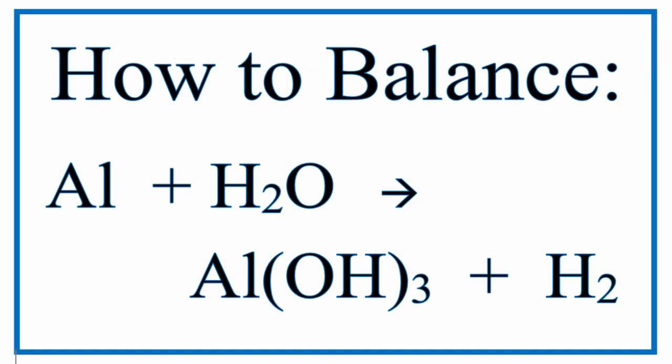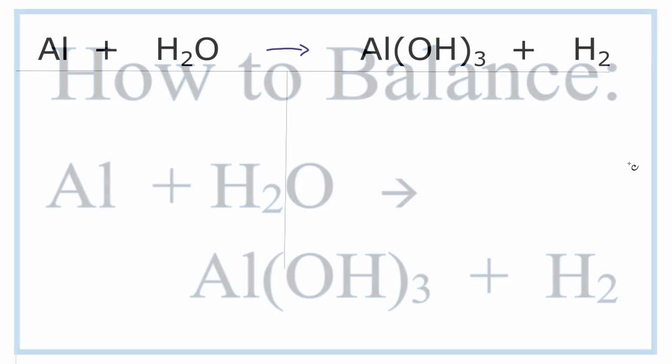If you're having problems balancing this particular equation, aluminum plus water gives you aluminum hydroxide and hydrogen, that's probably because it's a pretty tough equation. So let's work through it and see if we can find the solution.